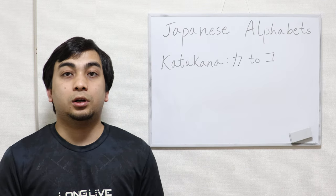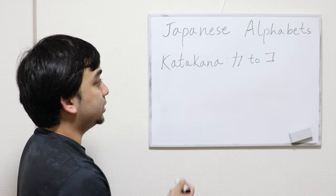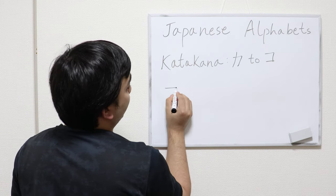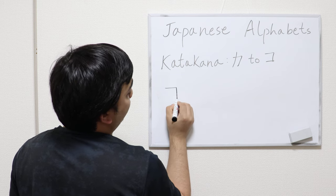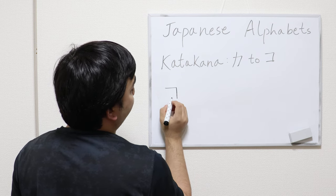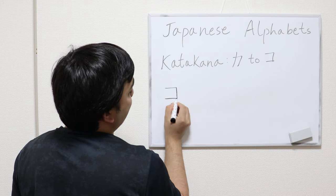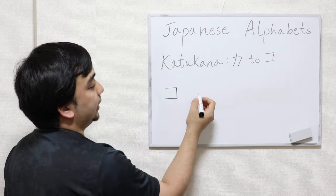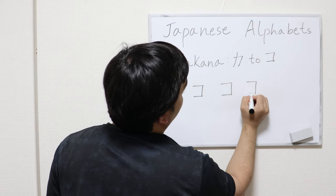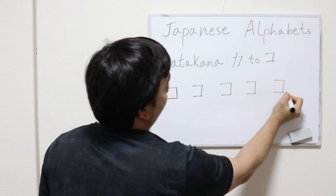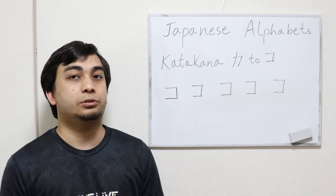Next, the final character in this row is ko. In writing ko, what you're going to do is start with a horizontal line, bend it 90 degrees and make a vertical line, and follow that with another horizontal line attached to the end of that vertical line. That's your ko. Write ko five to ten times, and pronounce it as you write.